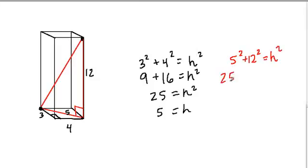5 squared is 25, 12 squared is 144. That's equal to our hypotenuse squared. If we add these two up, we get 169. That's equal to this long diagonal squared, so we find the square root of it. The square root of 169 is 13.